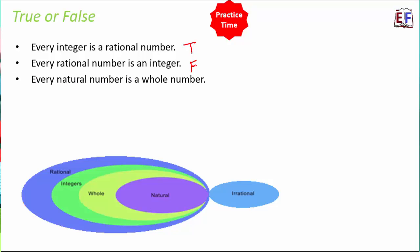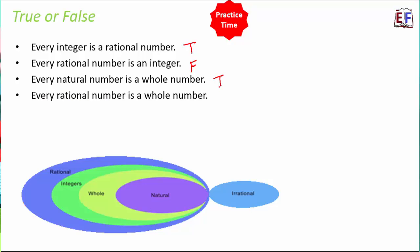'Every natural number is a whole number' — TRUE, because all natural numbers are contained within whole numbers. 'Every rational number is a whole number' — absolutely FALSE, because whole numbers are contained inside rational numbers, not the other way around.